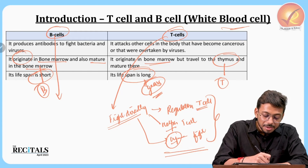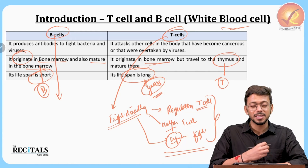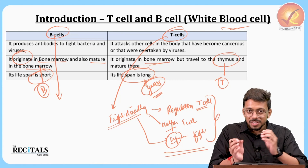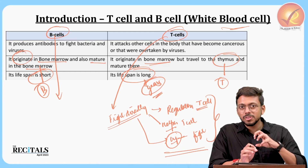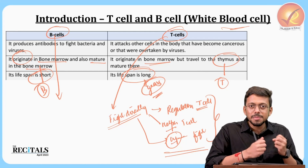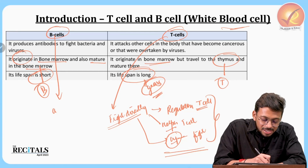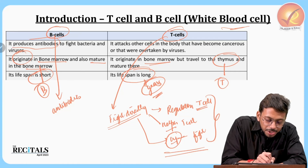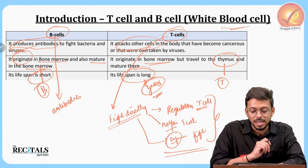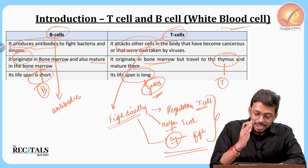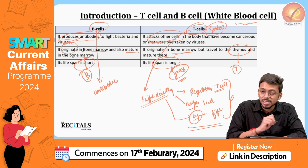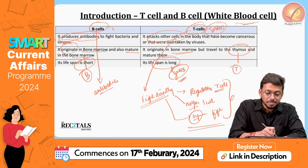B-cells can be thought of as a weapon manufacturing factory. Whenever some kind of threat enters the body, B-cells become active and start producing antibodies to attack the threat. So while T-cells are the soldiers, B-cells are the weapon-producing factories.